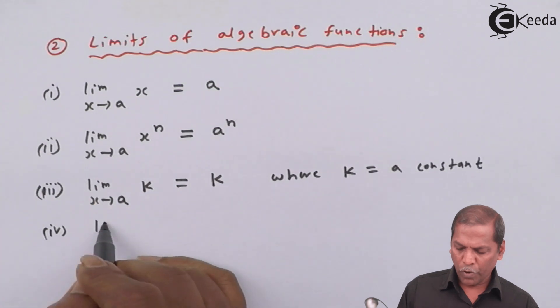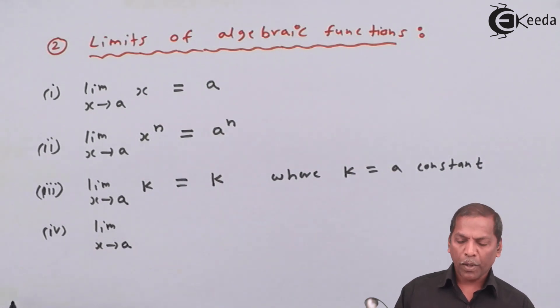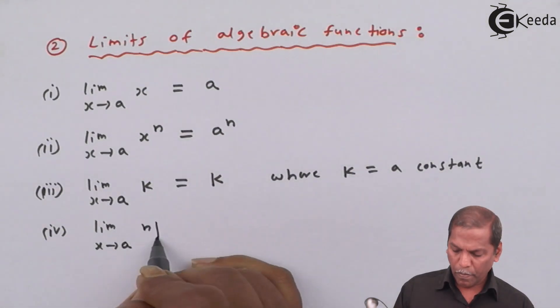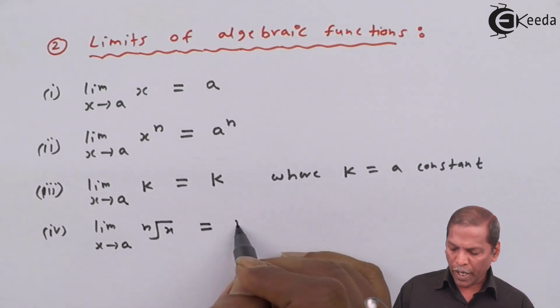Number four: limit x approaches a of nth root of x equals nth root of a.